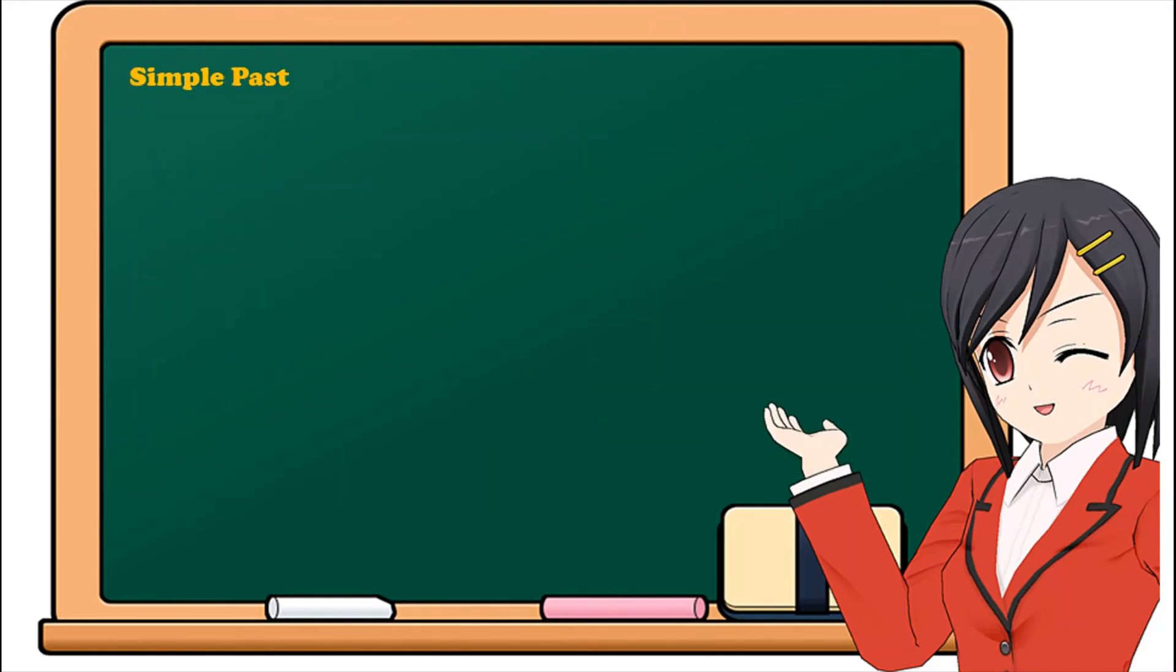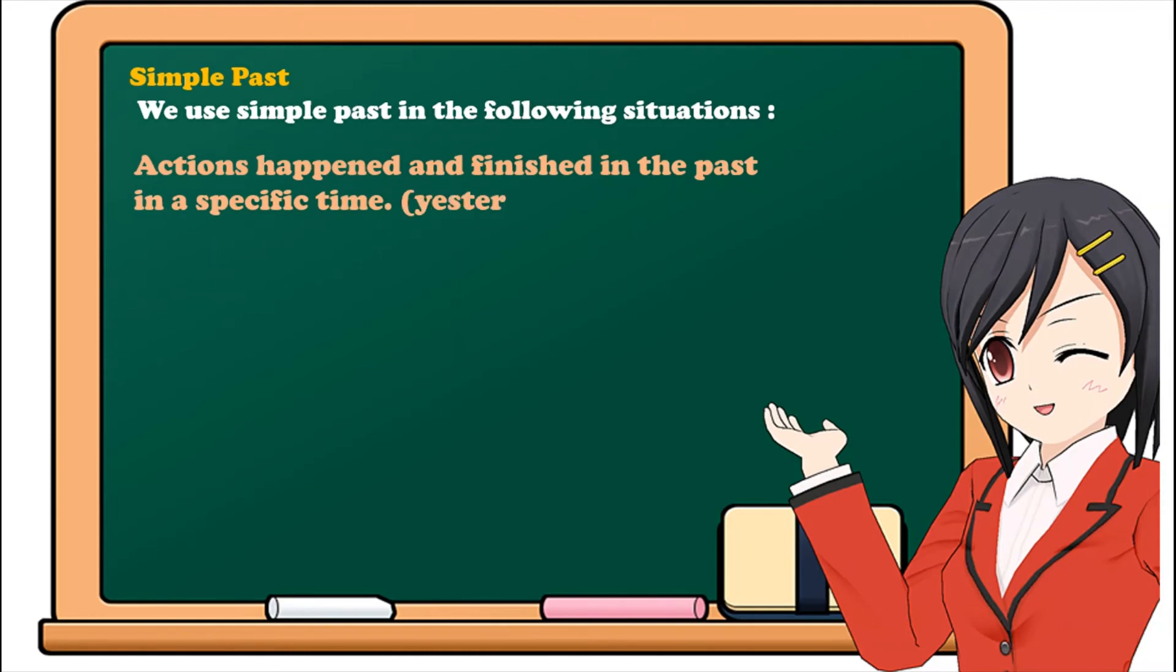Okay, now let's see when do we use simple past. Number 1: For actions happened and finished in the past, in a specific time. For example, yesterday, last week, month, whatever, and ago, like five years ago, one minute ago, one hour ago. For example, I watched a film yesterday evening.